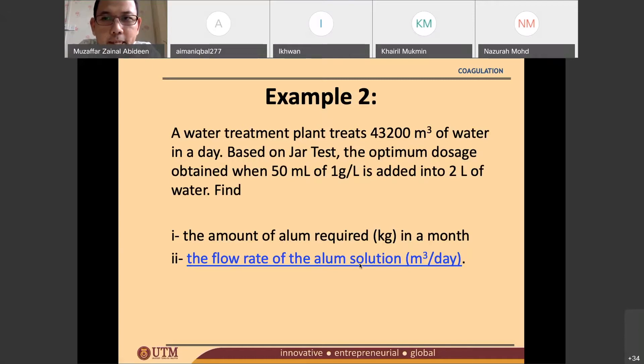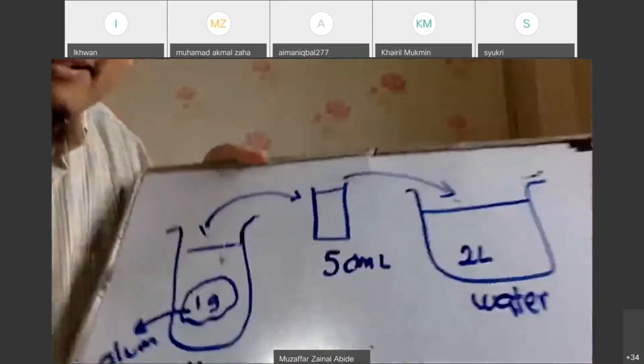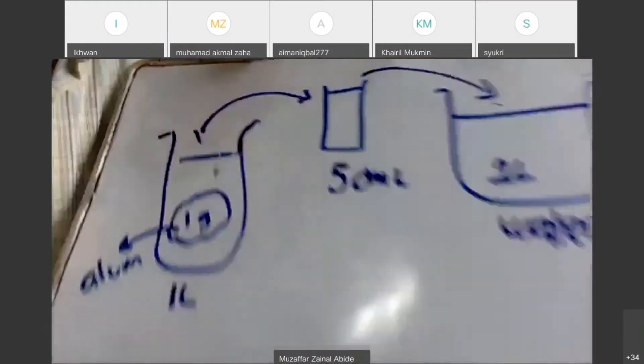Based on the jar test, the optimum dosage obtained when 50 ml of 1 gram per liter is added into 2 liters of water. What does it mean then? Read it again since we don't really understand the questions. Based on the jar test, the optimum dosage obtained when 50 ml of 1 gram per liter is added into 2 liters of water. I see what it means.